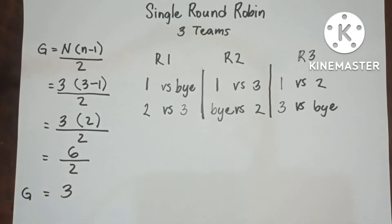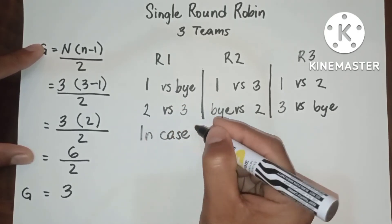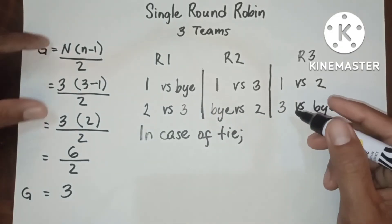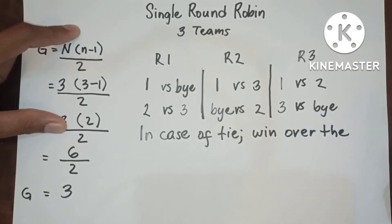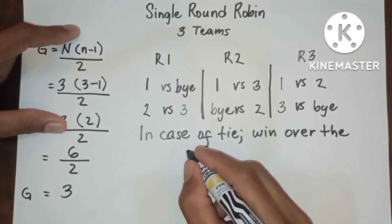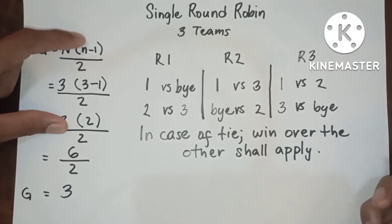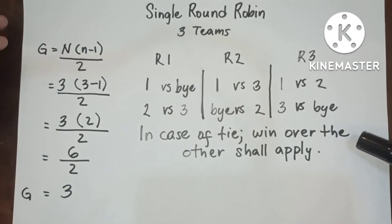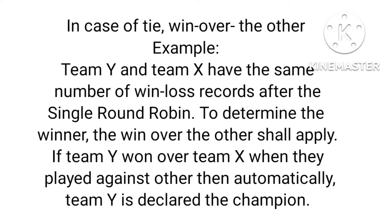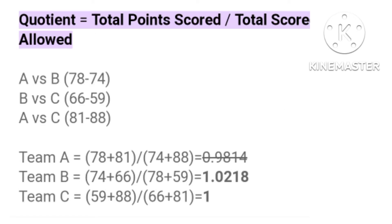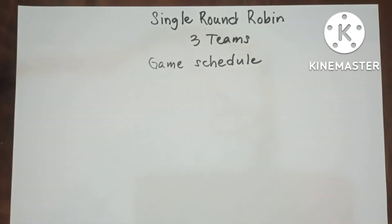Now, don't forget to break the tie in case of tie. Win over the other shall apply. In case of triple tie, quotient. Because in round robin, there is always a possibility to have a tie in the tournament.